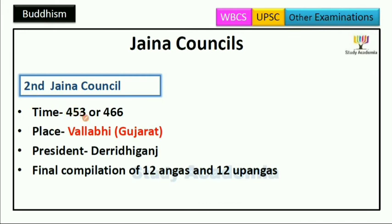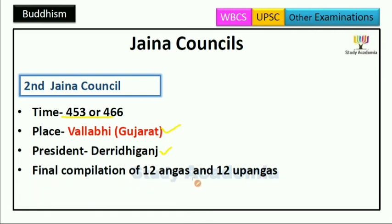The Second Jaina Council was held in 453–466 AD at Vallabhi, Gujarat. The president was Devardhigani. At this council, the final compilation of 12 Angas and 12 Upangas took place — 12 Angas ka final compilation hua aur 12 Upangas bhi isme add kiye gaye.